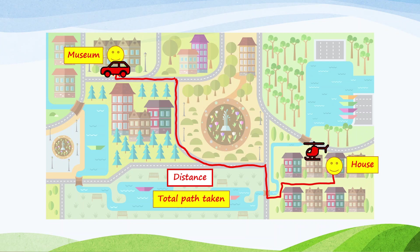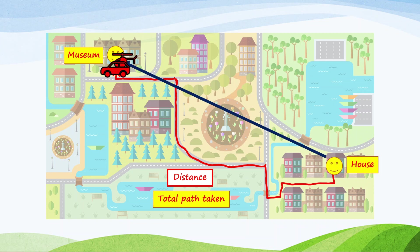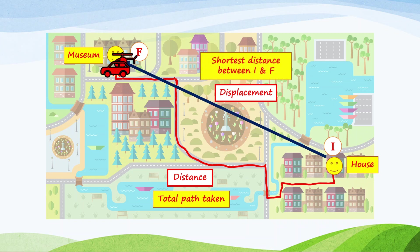If Winston has a helicopter, it can go directly from his house to the museum across a straight line. Winston's house is the initial point and the museum is the final point. The shortest distance between initial and final point is called the displacement. Displacement is the shortest distance between initial and final point.